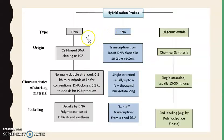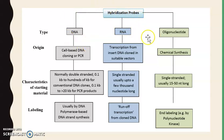Depending on their nature, nucleic acid probes are also known as hybridization probes because they are used in the process of hybridization to identify unknown sequences present in DNA, RNA, or any kind of gene. They can be divided on the basis of their nature into DNA probes, RNA probes, and oligonucleotides.